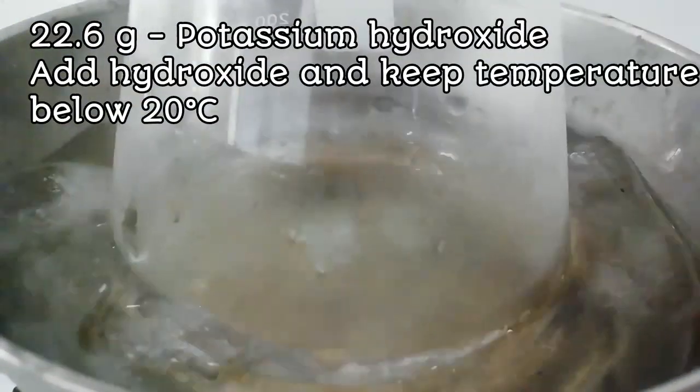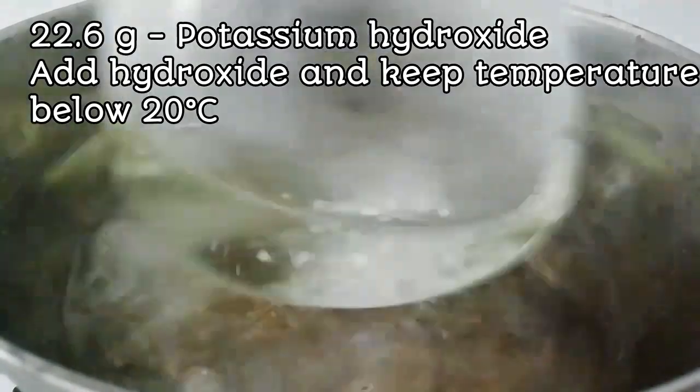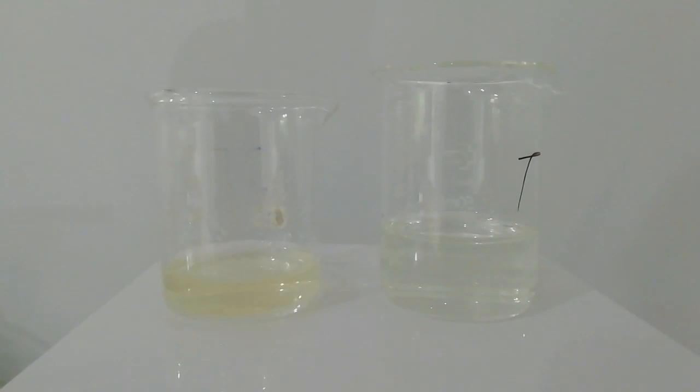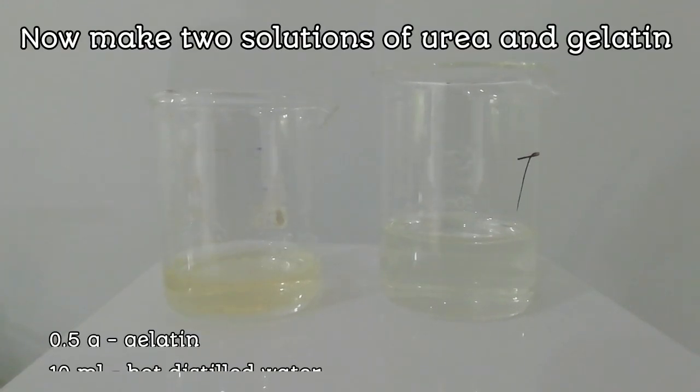Then, 22.6 grams of potassium hydroxide is added to the solution while stirring continuously. In this case, keep the temperature below 20 degrees Celsius.